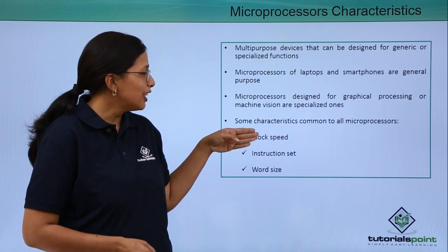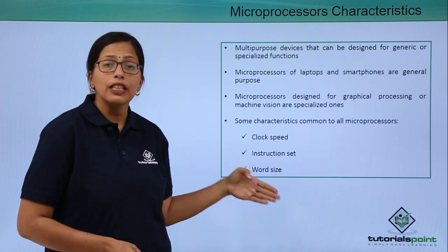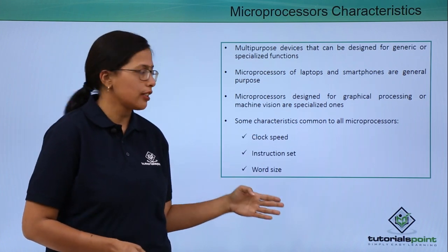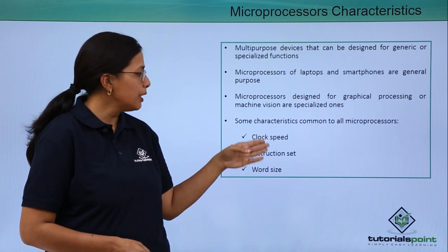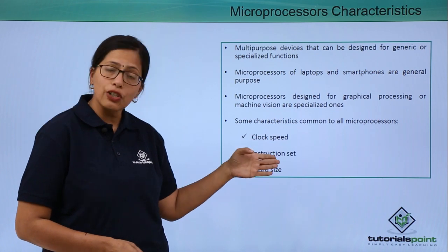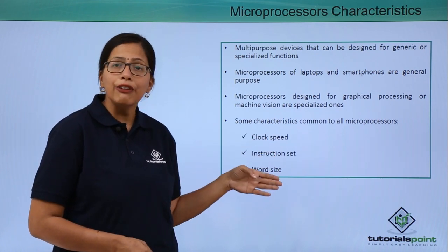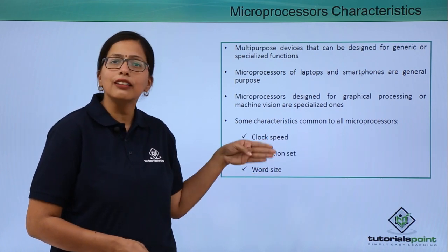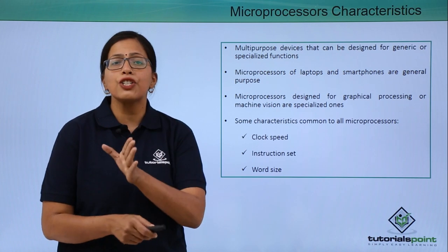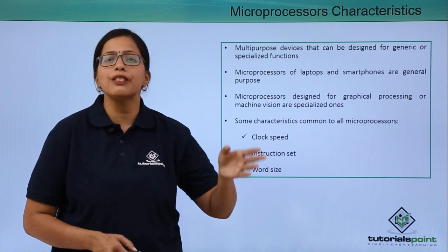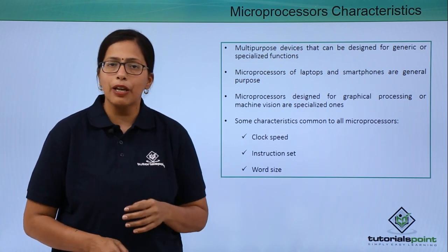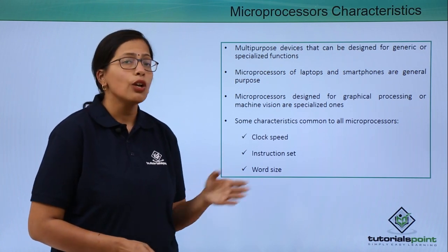Whether it is a generic microprocessor or a specific microprocessor, it will have these three characteristics: clock speed, instruction set, and word size. In fact, these are the three characteristics that differentiate between these two types of microprocessors.